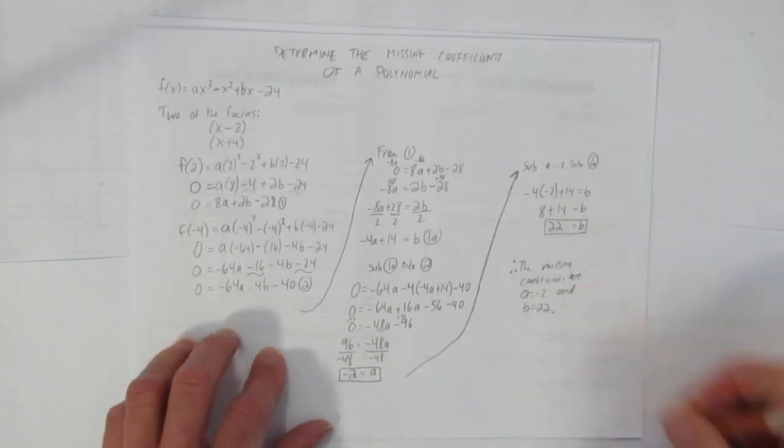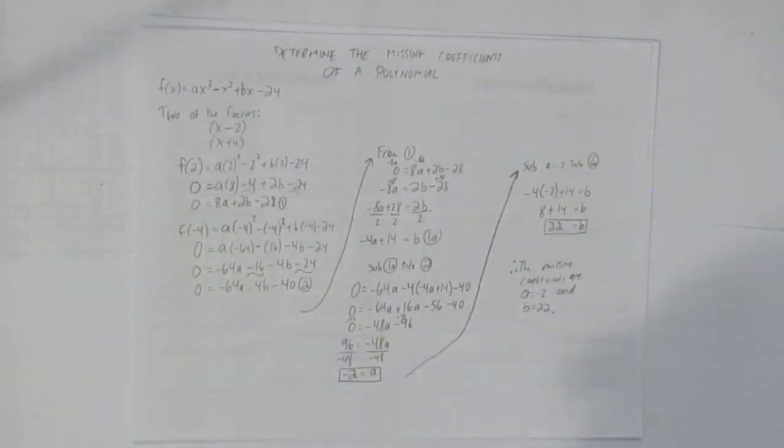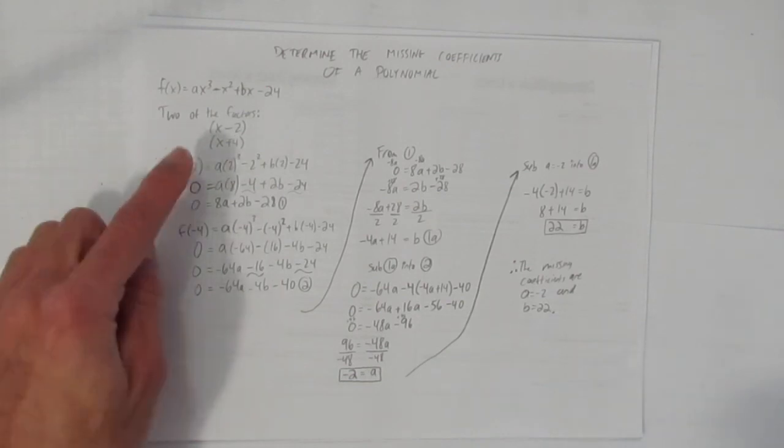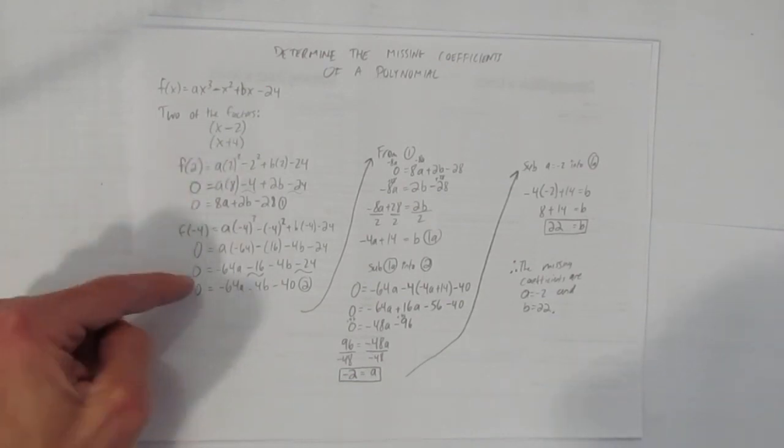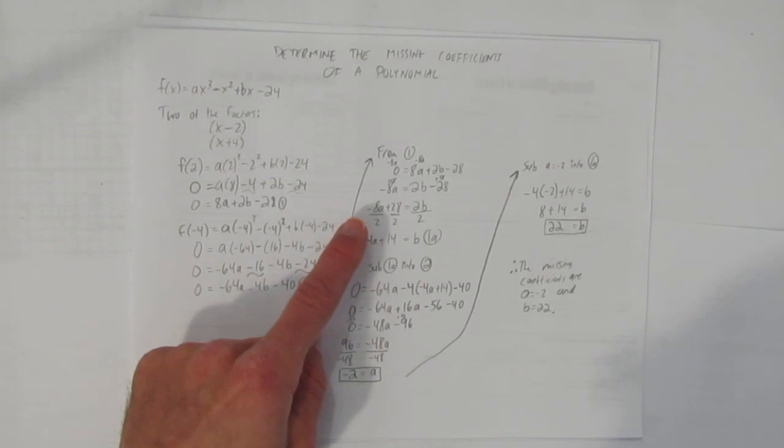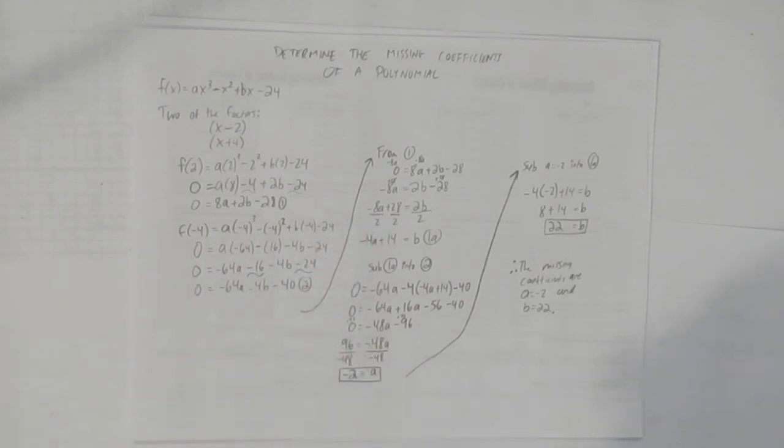And we're done. Again, we've solved for the missing coefficients of a polynomial by using the zeros of the factors to create two equations. And once we created two equations, we solved using substitution. Thank you.